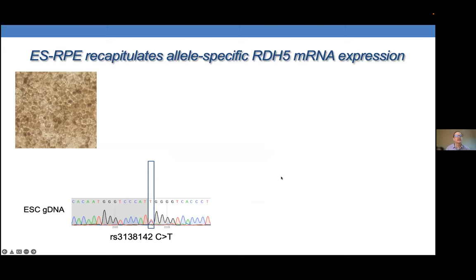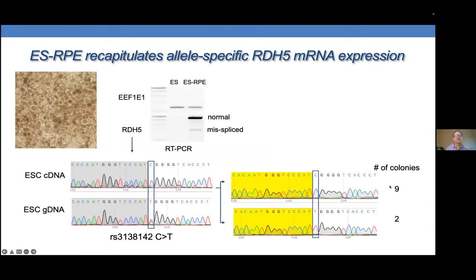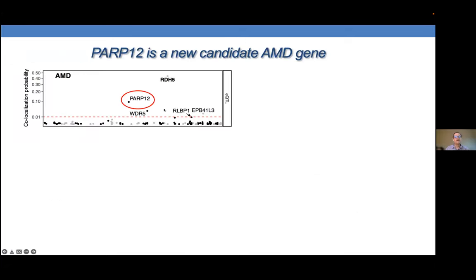We also identified PARP12 as a new AMD gene. The same variant is associated with the eQTL effect at very high confidence, and it was sub-threshold for GWAS AMD risk, but together the two types of information strongly suggest that PARP12 is a new AMD gene. PARP12 is a mono-ADP-ribosylase that adds ADP ribose to target proteins. Not much is known about it — it's an interferon-inducible gene, and virologists have found it targets viral proteins in infected cells for degradation.